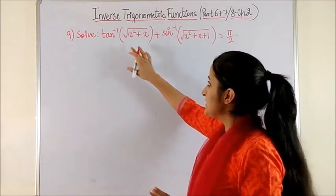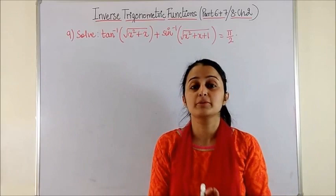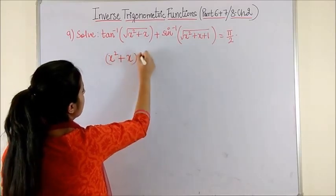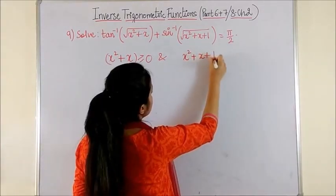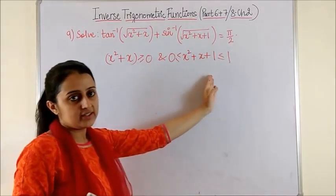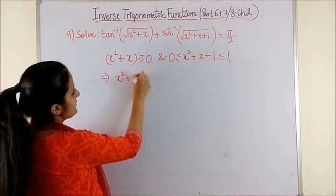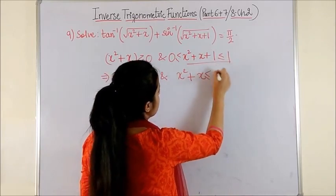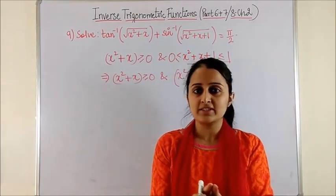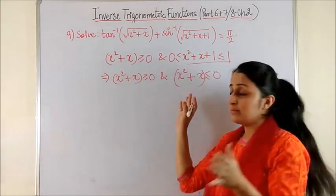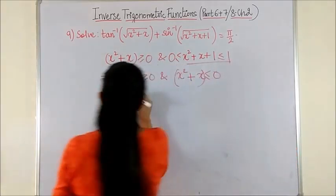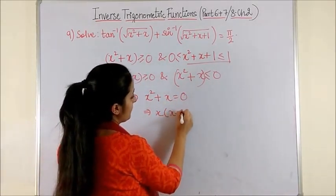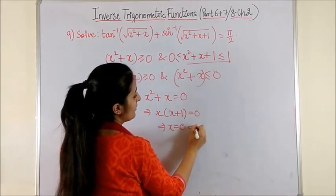Question 9. We need the expression inside the square root to always be positive since we're dealing with real numbers. From this expression, x² + x ≥ 0, and likewise since sine inverse lies between 0 and 1, we get x² + x ≤ 0 as well. Having both x² + x ≥ 0 and x² + x ≤ 0, we reach consensus at x² + x = 0, which gives us two roots: x = 0 or x = −1.